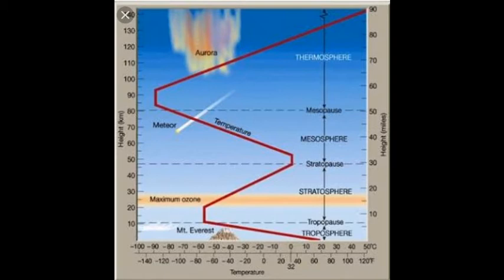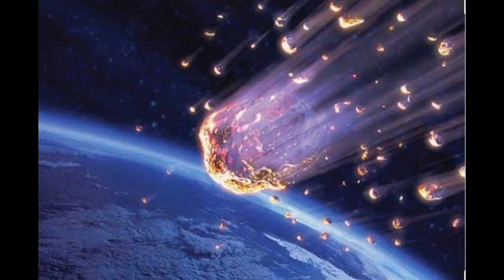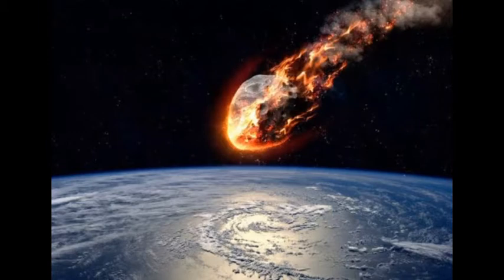Why does temperature decrease in the mesosphere? As you go higher, the air gets colder and much thinner — less dense — than in the stratosphere below. There are very few air molecules to absorb incoming electromagnetic radiation from the sun. Even carbon dioxide in the mesosphere helps to make this layer cold.